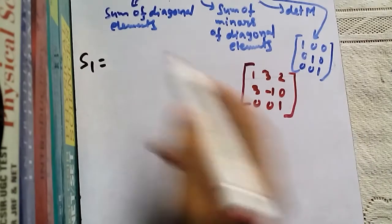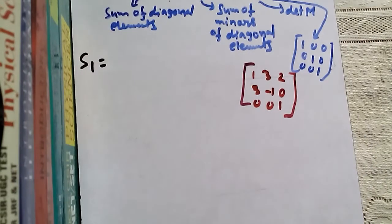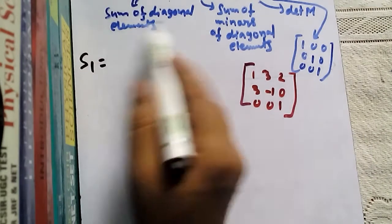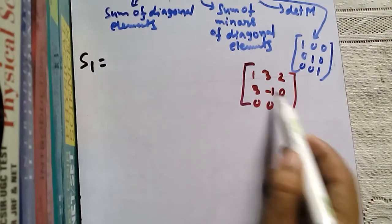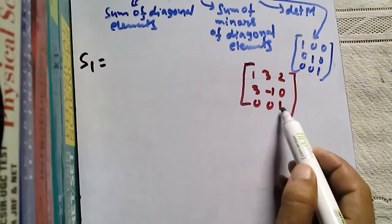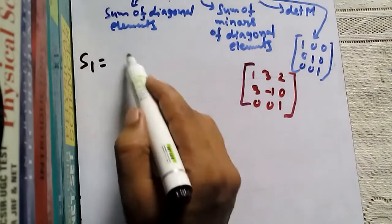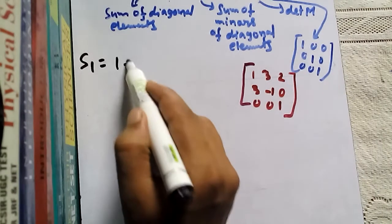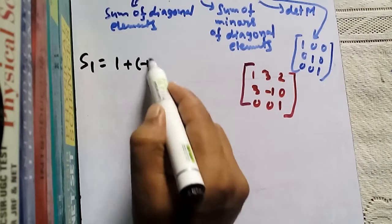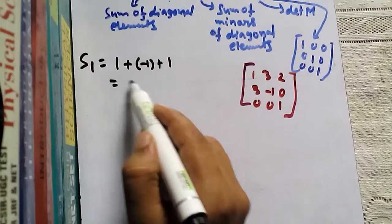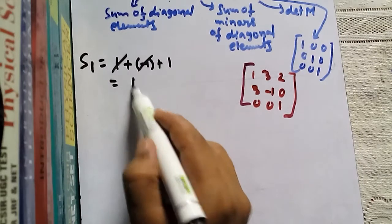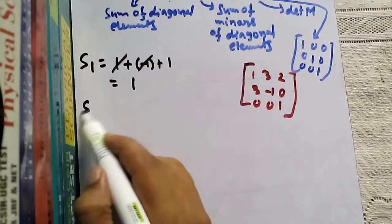Now S1 — how to find S1? S1 is the sum of diagonal elements. The diagonal elements are 1, −1, and 1. Their sum: 1 + (−1) + 1 = 1. So S1 = 1.